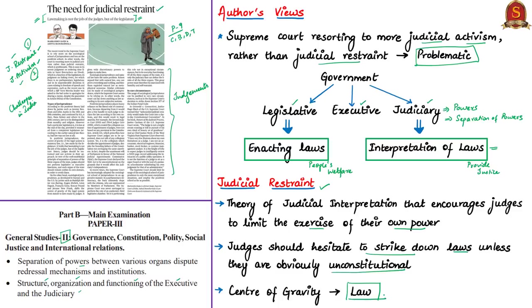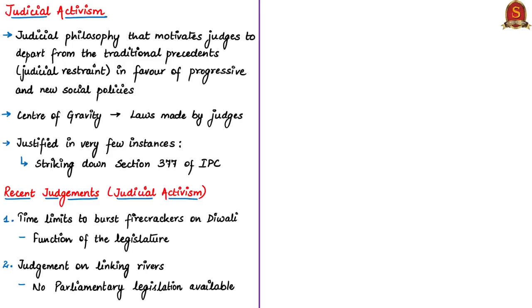If the judiciary goes beyond judicial restraint and starts to enact laws, then this is called judicial activism. Judicial activism is justifiable only in a few instances when the court is in favor of progressive and new social policies. For example, the authors have mentioned the striking down of Section 377 of the Indian Penal Code, which deals with unnatural offences including homosexuality. This is considered an acceptable act of the judiciary.